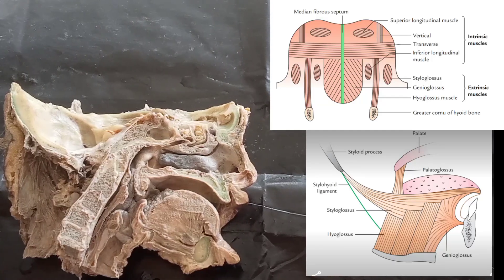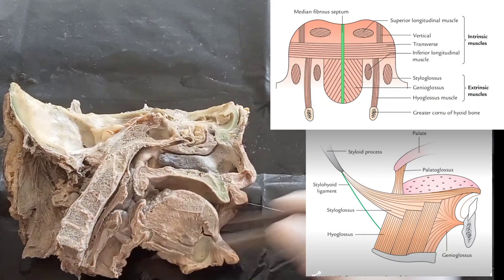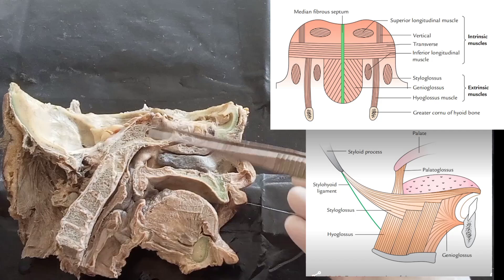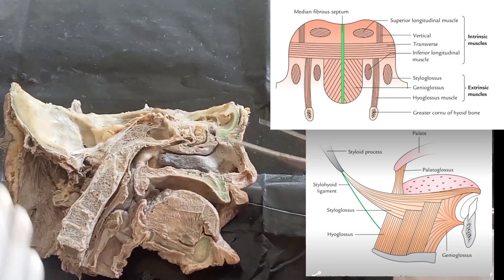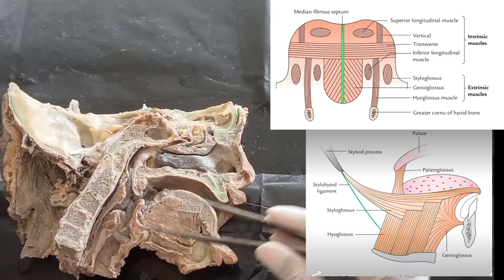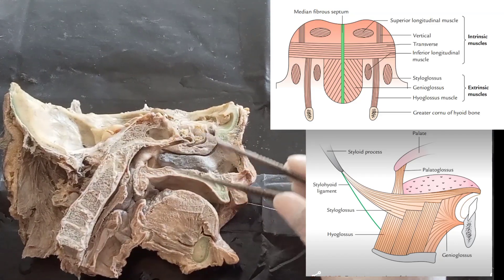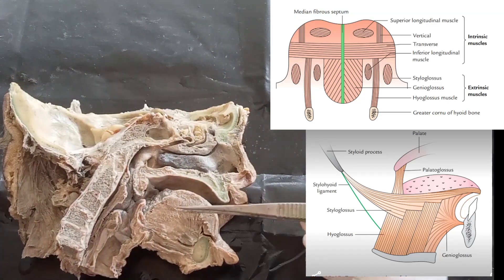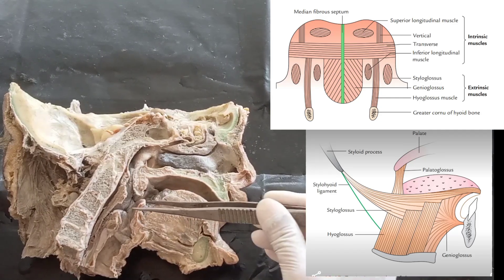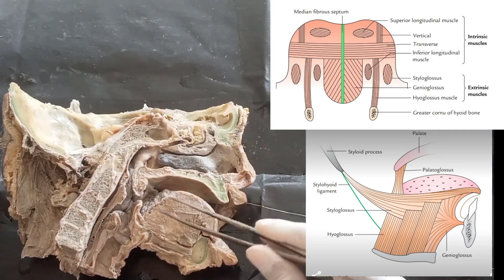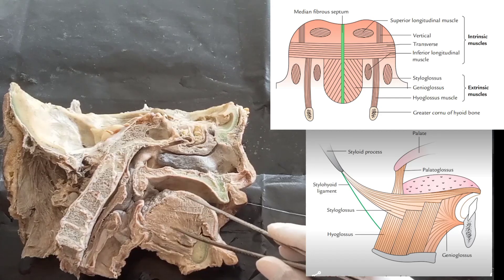Good morning everyone. Today we have a demo on the structures present on the mid-sagittal section of the head and neck. Let's start with the main topic: the tongue. This is the tongue, and on the back side is the epiglottis. The examiner can ask you: what are the extrinsic and intrinsic muscles of the tongue?